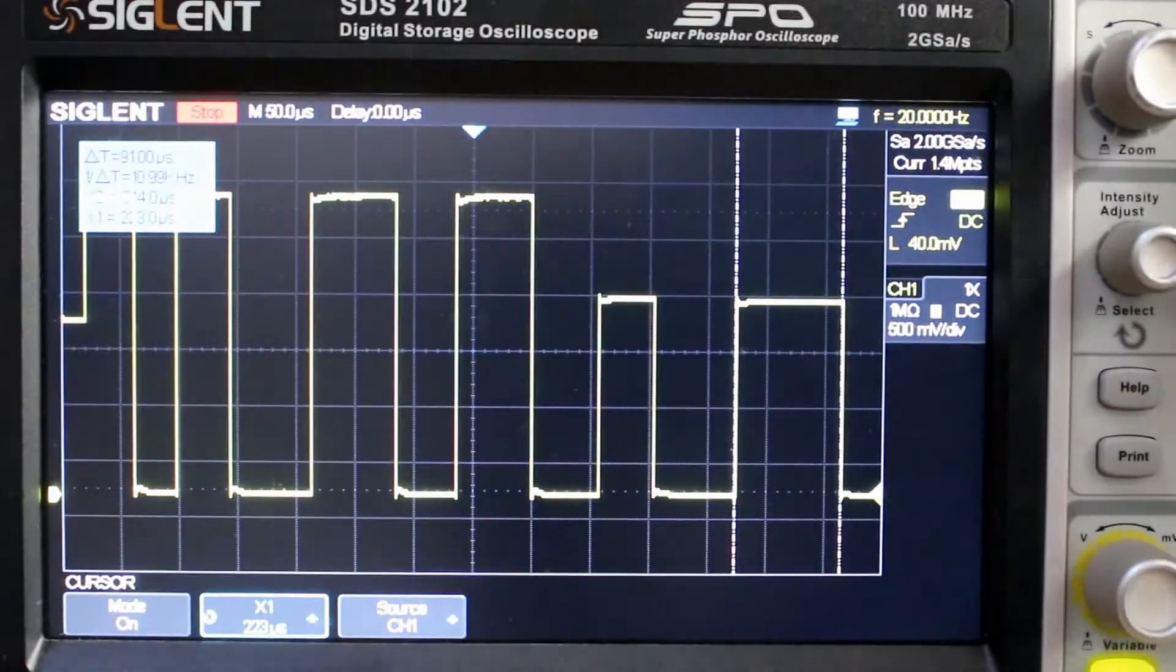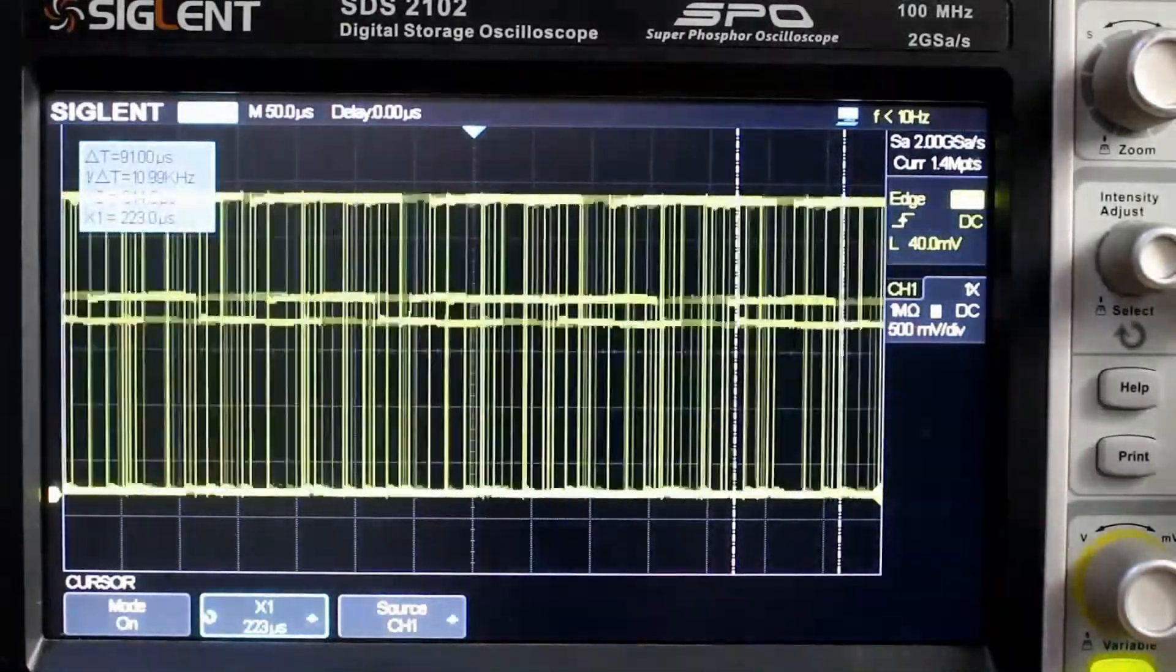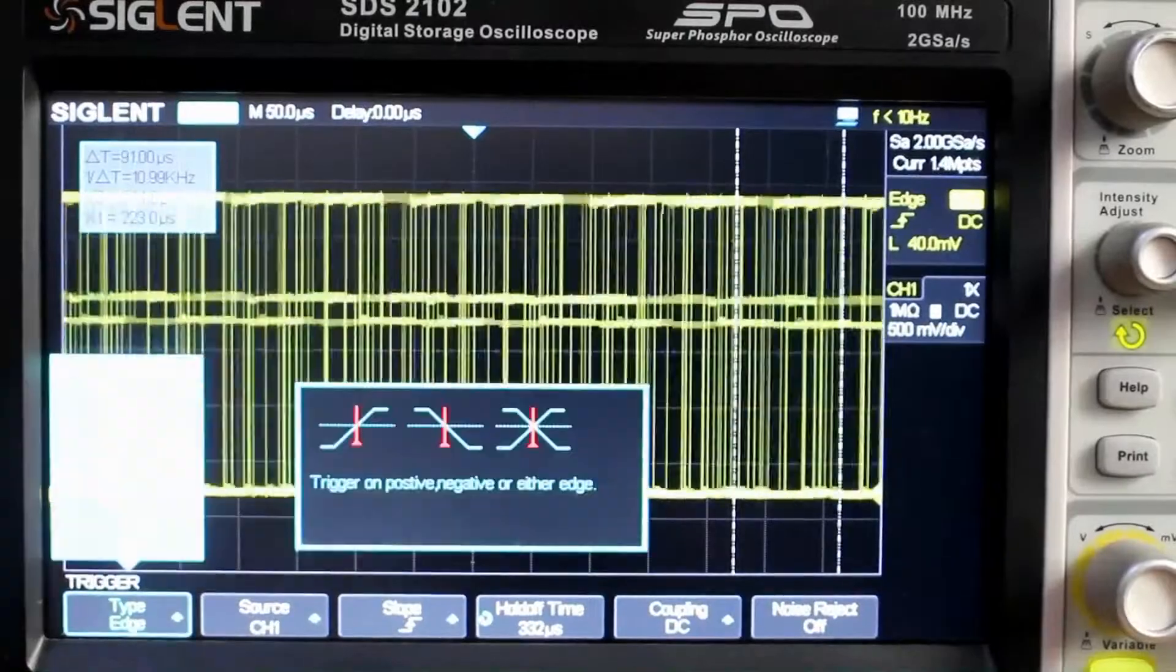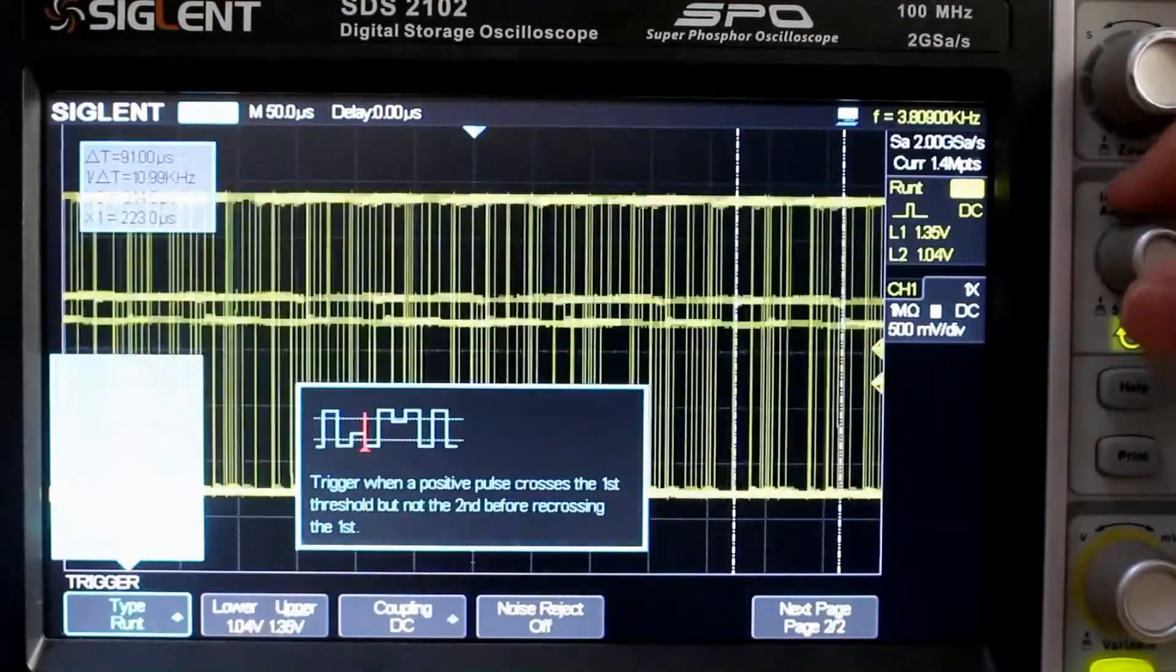91 microseconds. So somewhere in between that 49 and 90 for our time. Now let's adjust the trigger type down to Runt.